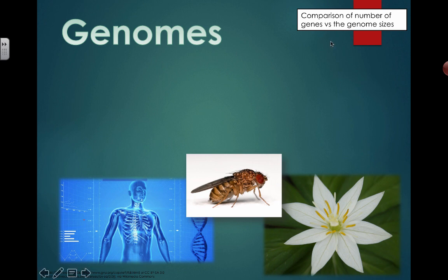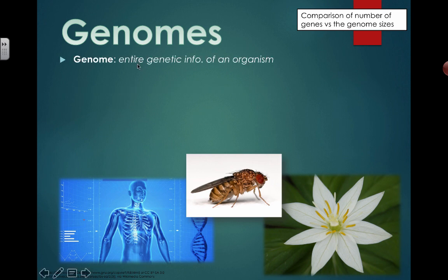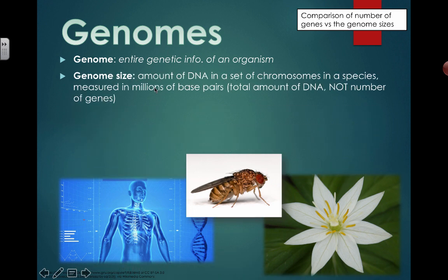So when we talk about genome, here I have a reminder to understand the difference between the number of genes and the genome size. We're talking about genome size, and there are extra notes in the syllabus calling attention to this. You need to know that my entire genome is all of my entire genetic information — all of my base pairs, all of the DNA that's there. Not all of that DNA actually codes for proteins. The stuff that codes for proteins makes up a different proportion of the entire genome depending on the organism. Your genome is all of your DNA — the total amount of DNA in a set of chromosomes in a species, measured in millions of base pairs (BP). Total amount of DNA, not the number of genes.